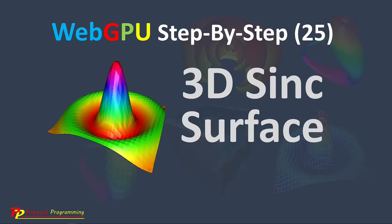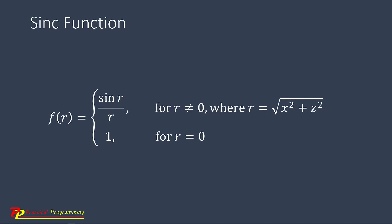In this video, I will explain how to use the color map model and the simple surface data function to create a 3D sinc surface. Here is the definition of the sinc function. It is equal to sine(r) over r for r not equal to zero, where r equals the square root of x squared plus z squared. For r equal to zero, this function equals one. In fact, the sinc function is a 2D Fourier transform of the rectangular function.